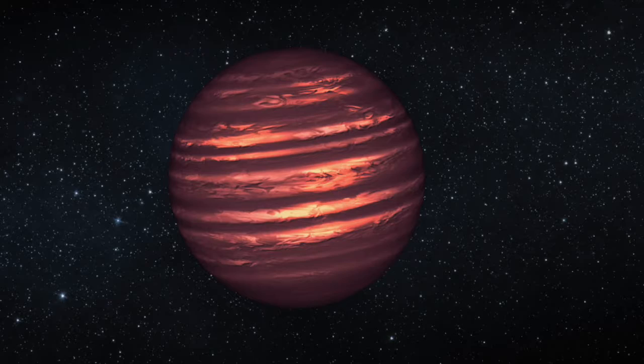If you play gravity against ordinary gas pressure — the balloon-fighting-you kind of gas pressure — what you have is a star. Stars balance those forces and shine very hot. This thing has to be pretty hot to hold itself up against gravity, and as it's hot it will glow. Light transfers energy through the body of the star, and at the edge some of it leaks out — that's what we call sunlight. Nuclear reactions replace the leaked energy, so a star can be stable for an awfully long period of time.